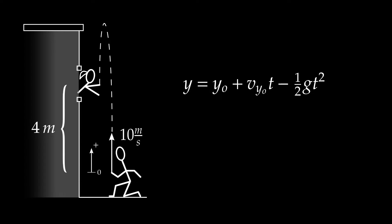So: y equals y-naught plus v_{y0} times t minus one-half gt². Flushing this out with numbers: the final position is four meters. The initial position y-naught is zero. The initial velocity is 10 meters per second positive, directed upward, multiplied by time — which I do not know — minus 4.9 times t squared. That 4.9 is of course half of 9.8. So I have the motion under gravity reduced to a purely mathematical statement about time — and you can see immediately it is quadratic.